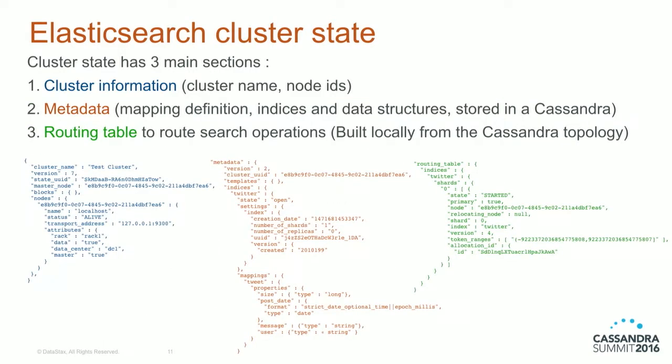The cluster state has three main sections: cluster information with the cluster name and node names (node names are now Cassandra host IDs), metadata containing your data structure definitions (the main part of your configuration), and in the routing table, which is computed locally by each node from the Cassandra token map.